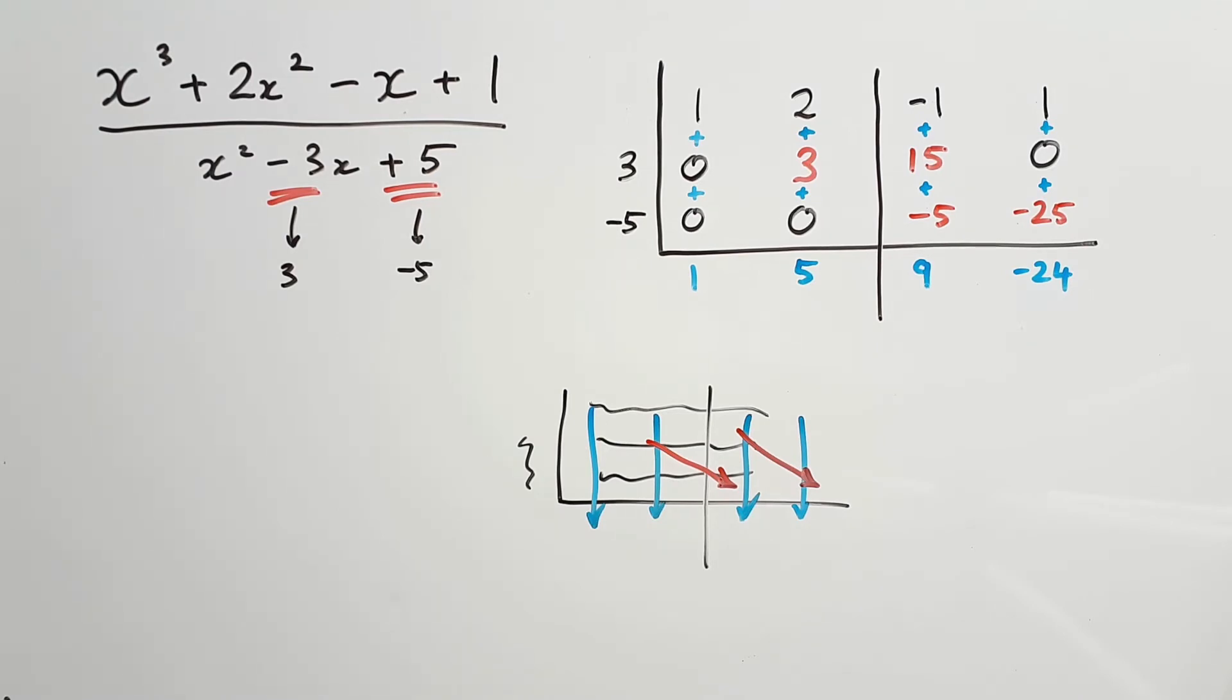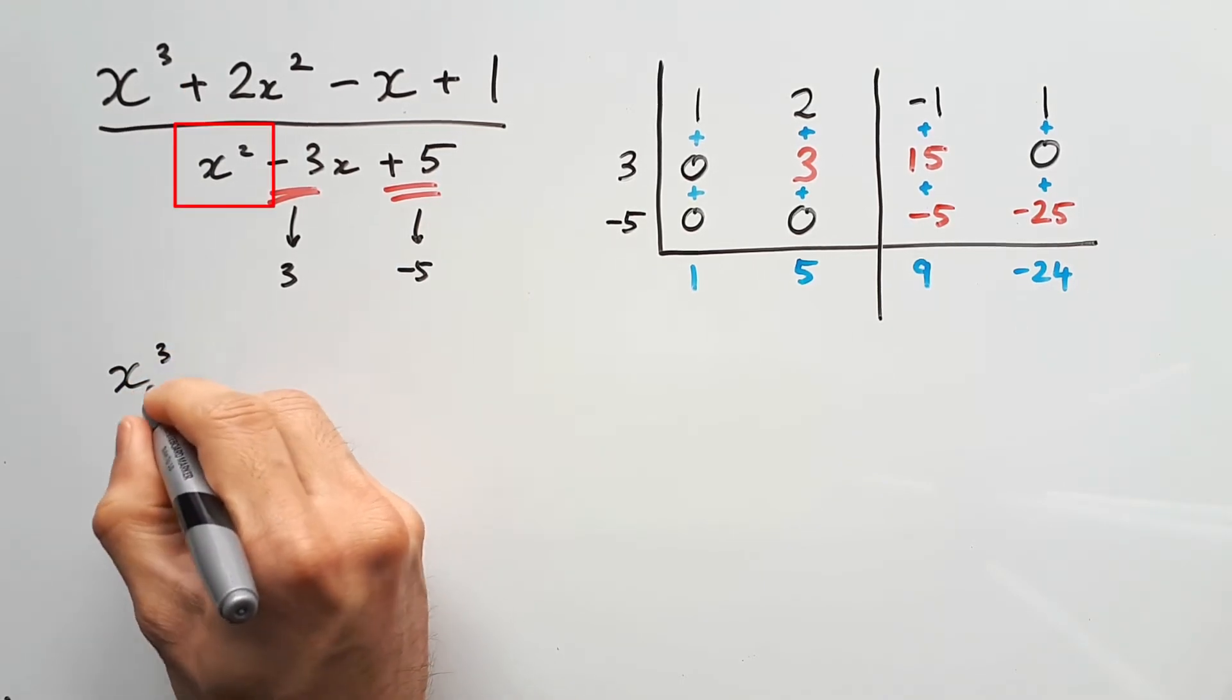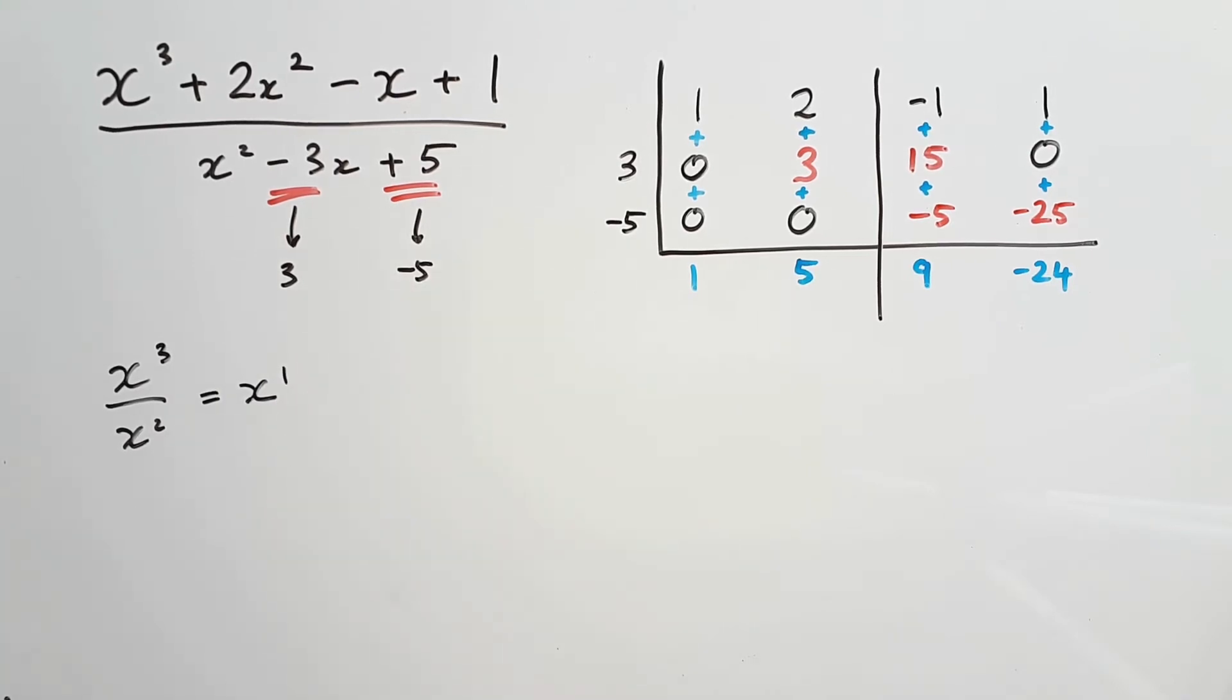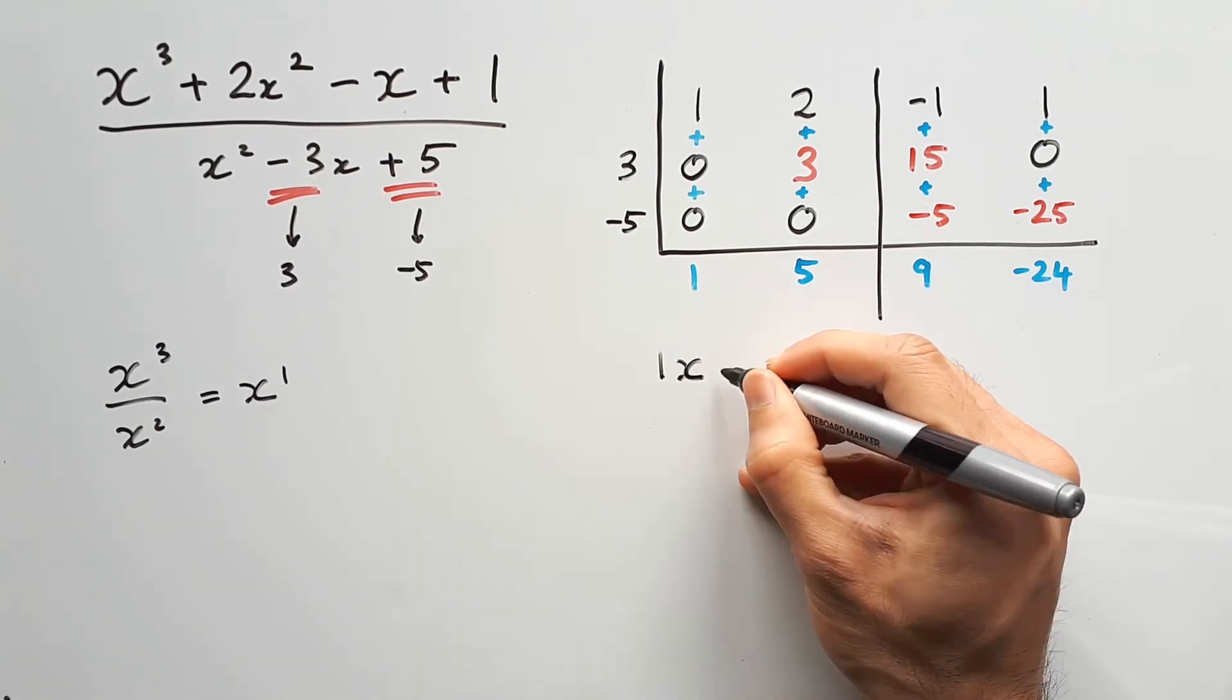The final step is to figure out how to write the quotient and the remainder into some kind of answer. It's going to be similar to how you do linear synthetic division. Basically, take the highest degree of your polynomial, which is x cubed, and divide that by the highest degree of your divisor, which is x squared. This x to the power of 1 tells us what our quotient is going to be. It's going to be some kind of linear expression, which is simply 1x plus 5.